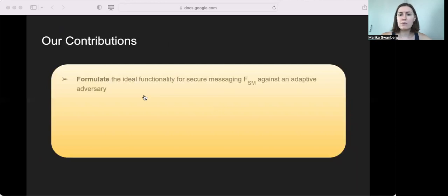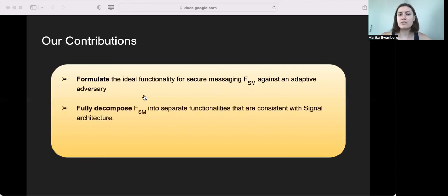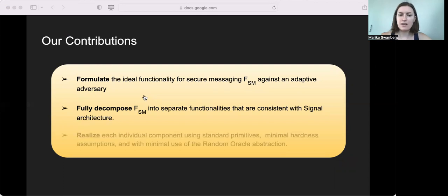So in this work, we formulate the ideal functionality that captures secure messaging, and we then decompose the secure messaging functionality into sub-functionalities that are congruent with the signal protocol design. Importantly, the sub-functionalities must be sub-routine respecting so that we can then apply our composition theorems. And lastly, we show how to realize these individual components using standard primitives and minimal hardness assumptions.